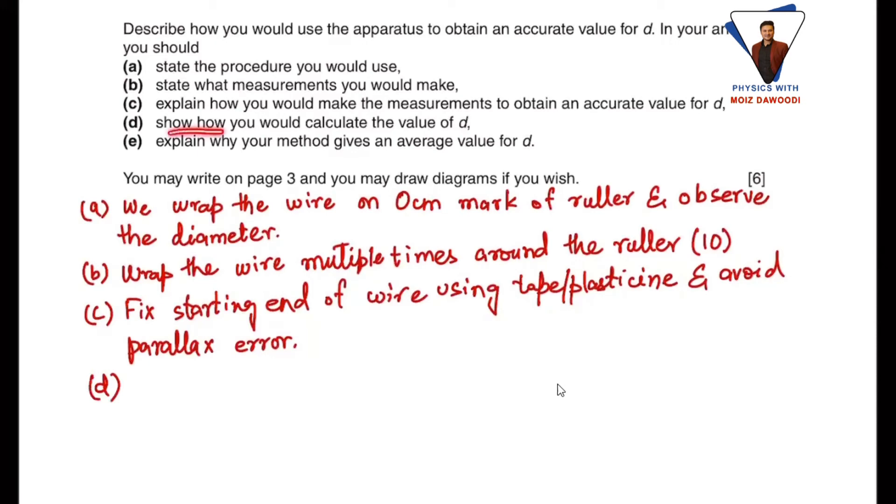Part d: explain how would you calculate the value for d. If you go towards the procedure part through the video, 10 wrappings corresponding to 1.1 centimeters. So what we do—divide total length by number of wrappings. In that way you will have the diameter as the total length by number of wrappings.